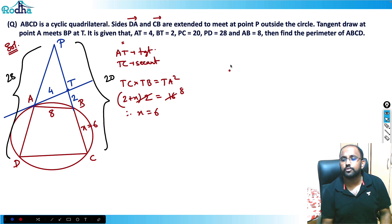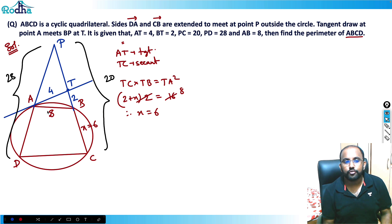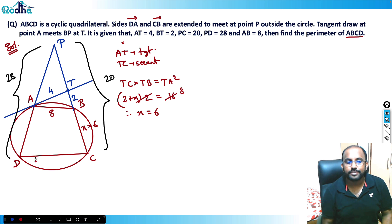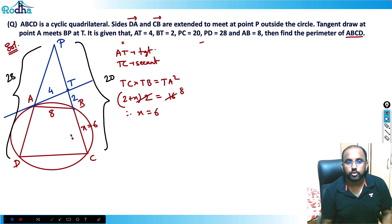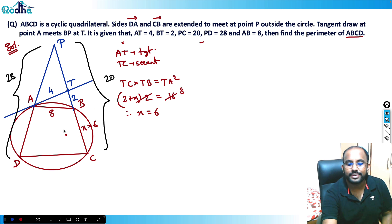I need to find the perimeter of ABCD, so I need all side lengths. AB = 8 is given, BC = 6 is found. Now I need to find CD and AD.